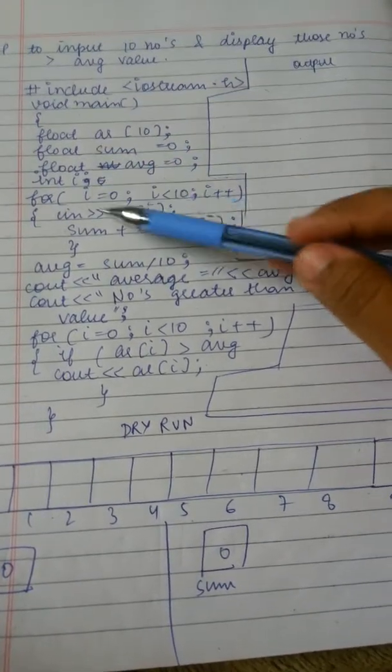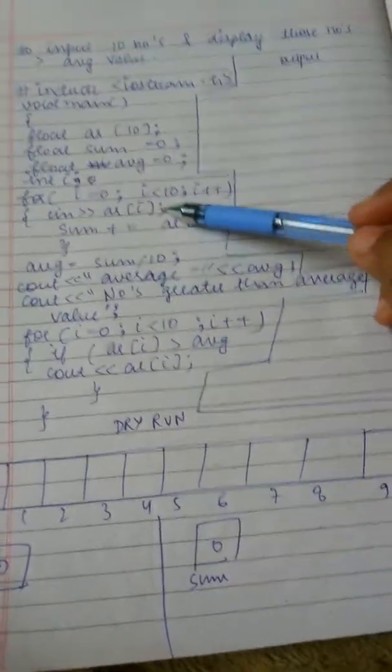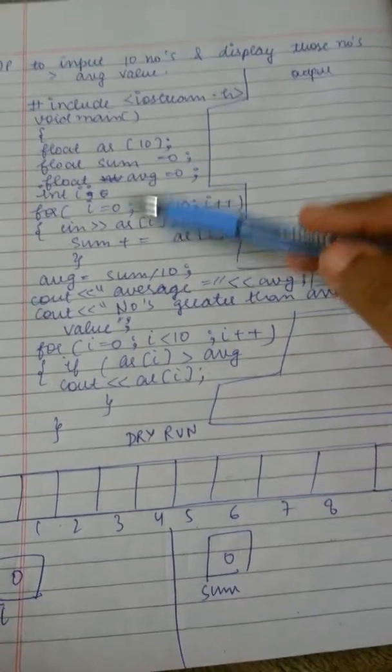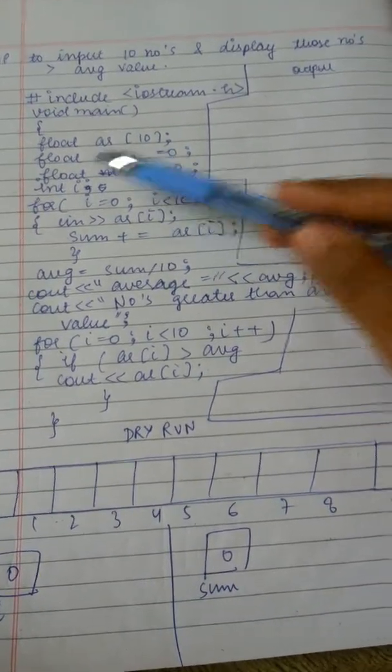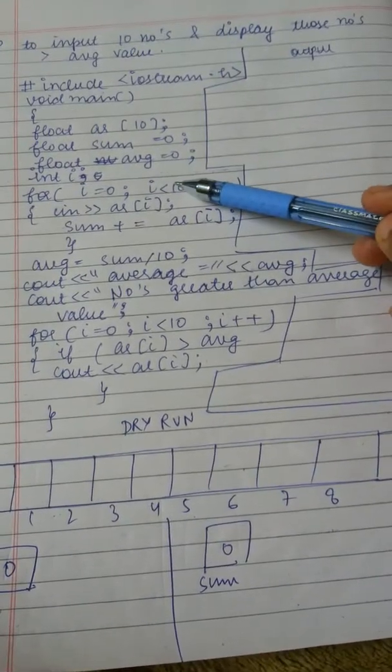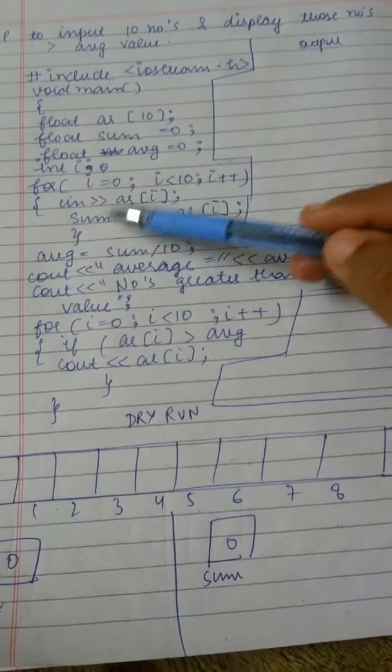So here it is: i equals 0, i is less than 10, and i++. The loop will be executed until these conditions become false. When the condition becomes false, it will come out of the loop.